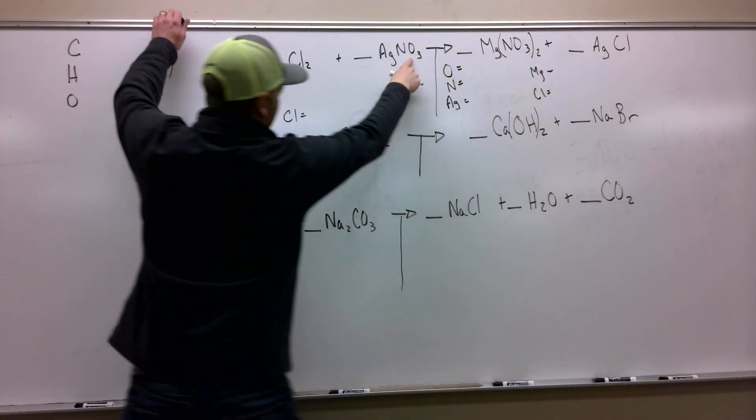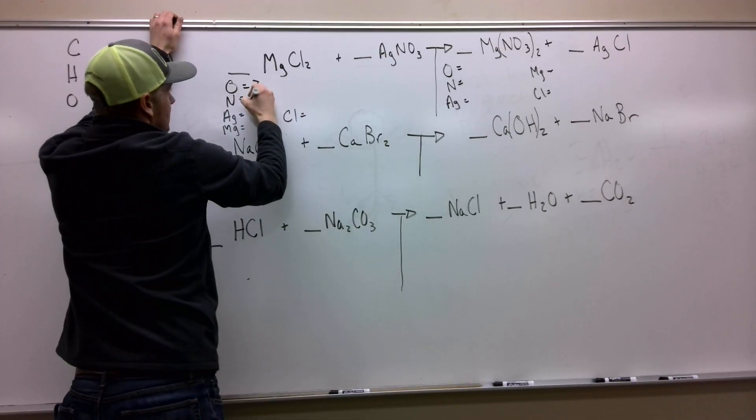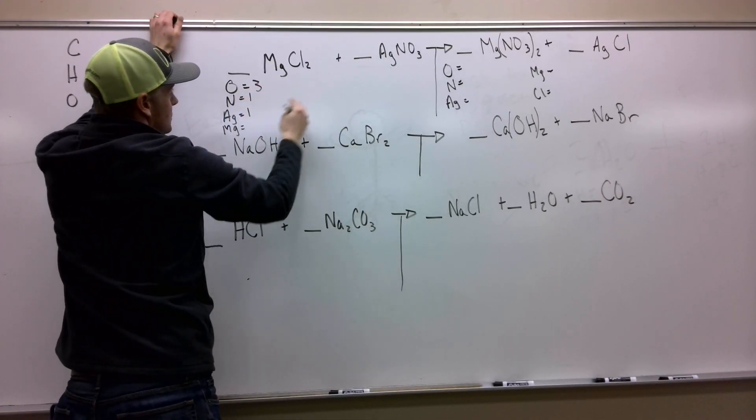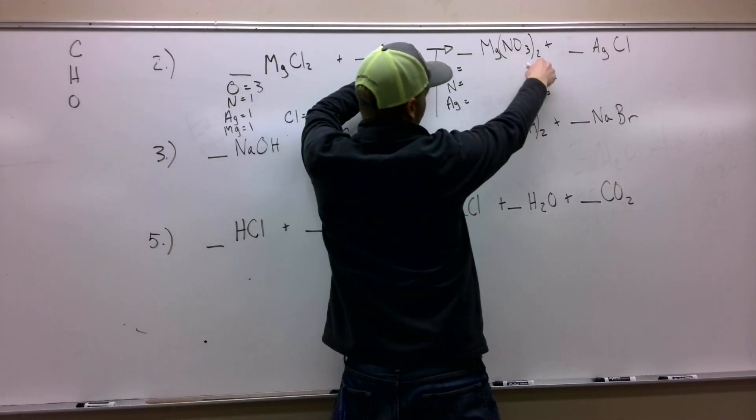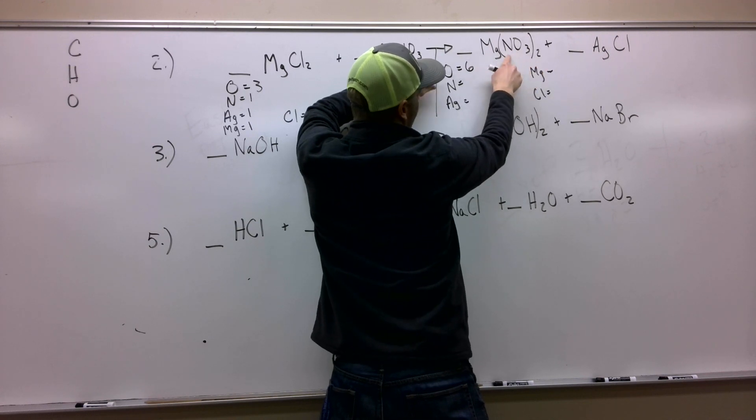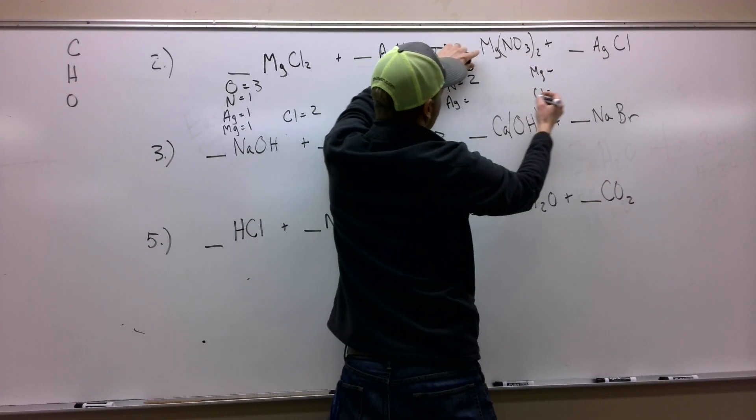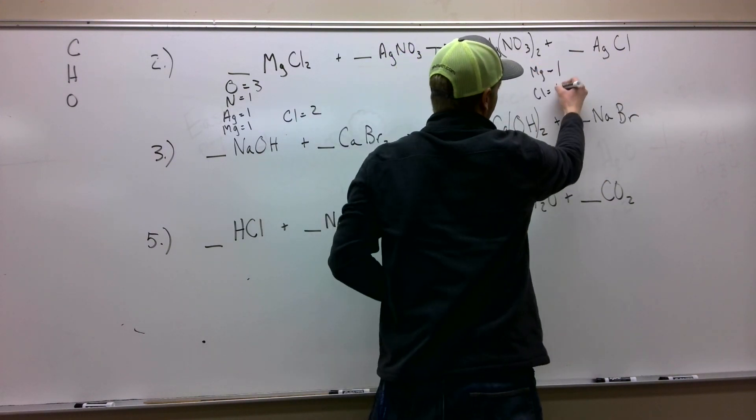When you look over here, you have three oxygens. We have one nitrogen. We've got one silver, two chlorine, one magnesium. Over here, we have two times three is six oxygen. We're going to have two nitrogen. We're going to have one magnesium, one silver, and one chlorine.